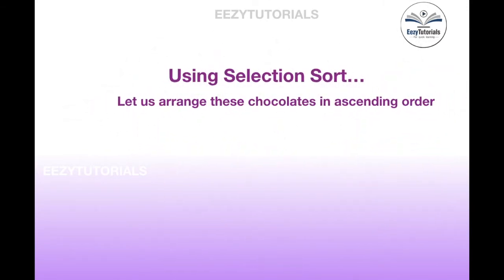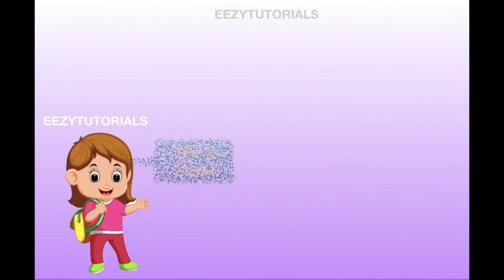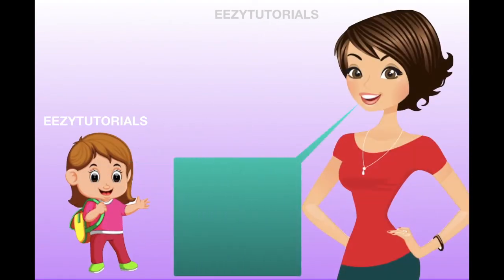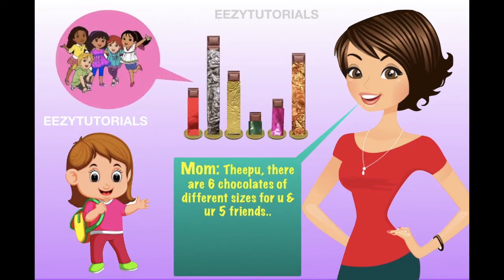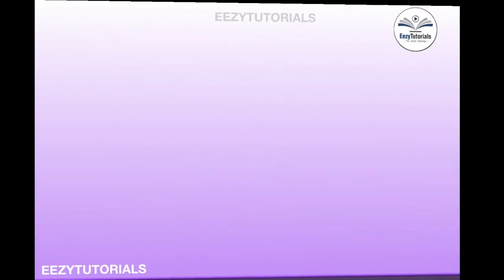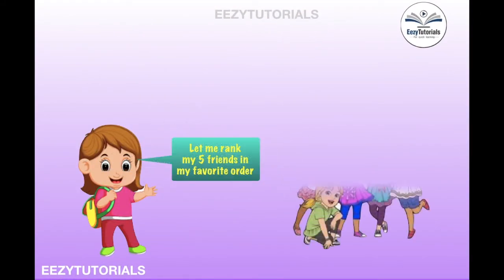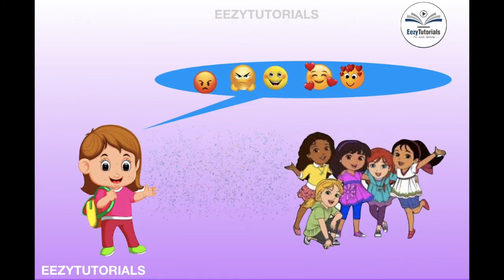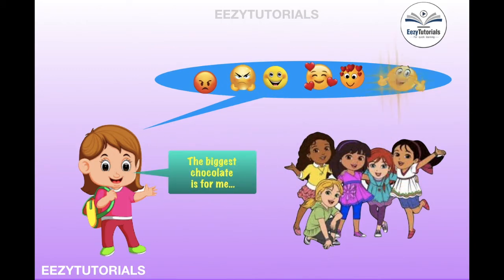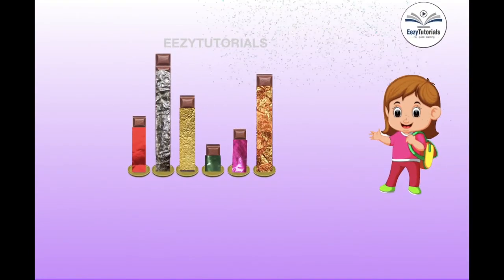Using selection sort, we are going to arrange these chocolates in ascending order. Let us see a small scenario. Thippo ranks five of her friends in her favourite order, and she wants the biggest chocolate. She is going to use selection sort for this.